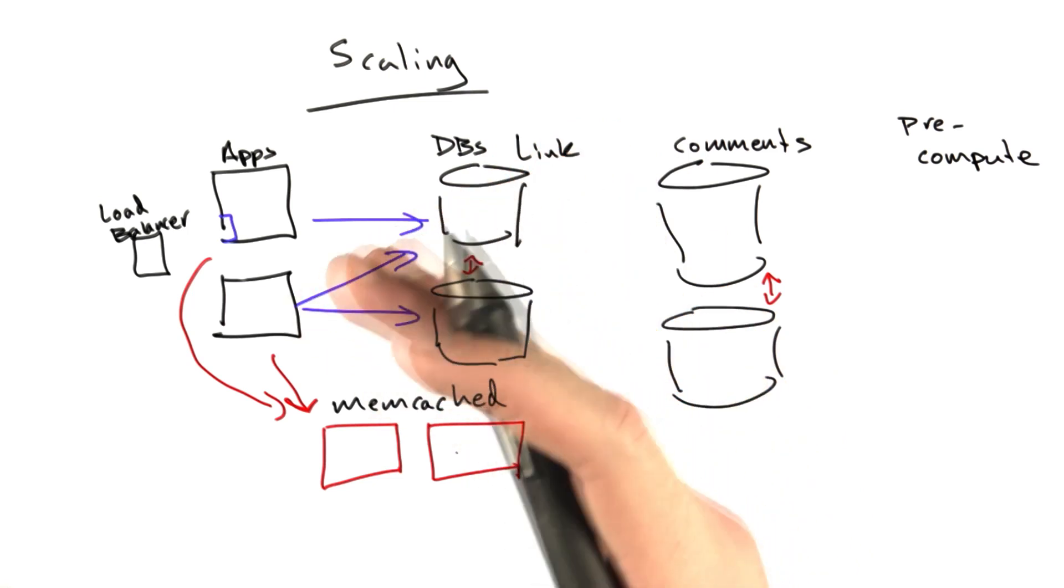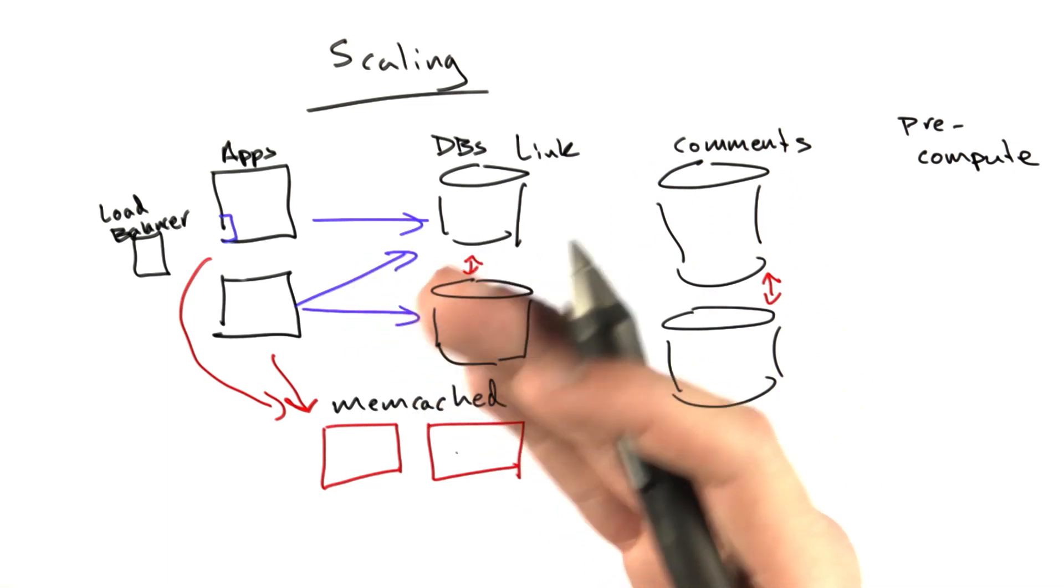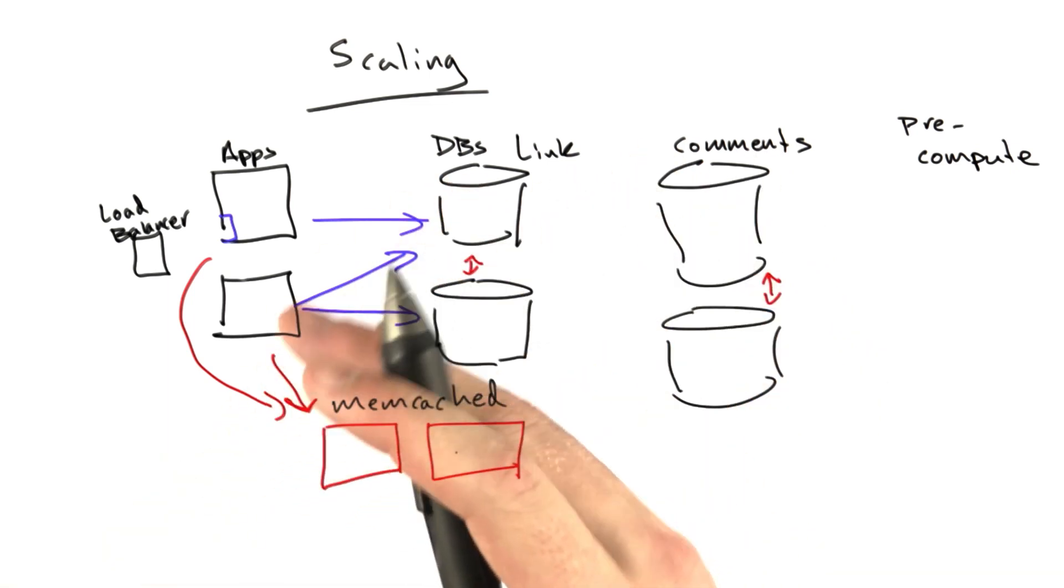Every user had their own listings of things they submitted and liked and their top things. Every Reddit had a new page and a hot page and a bunch of different sorts. So we started pre-computing everything.